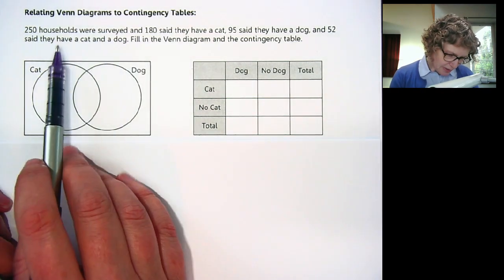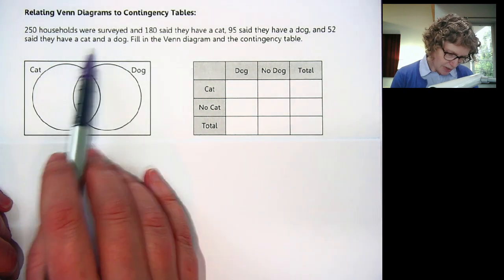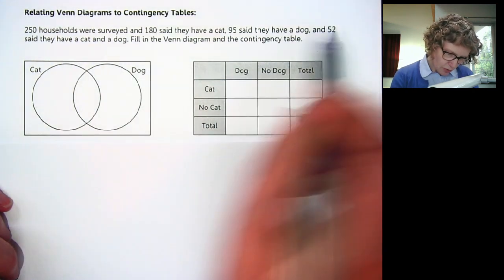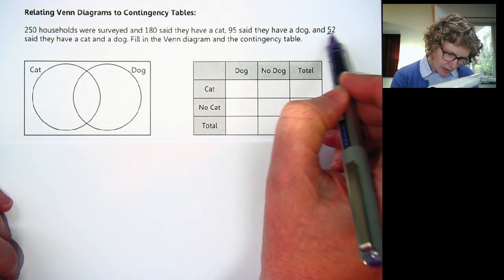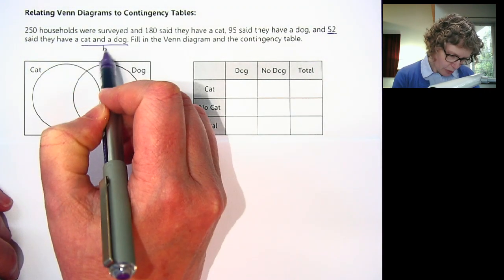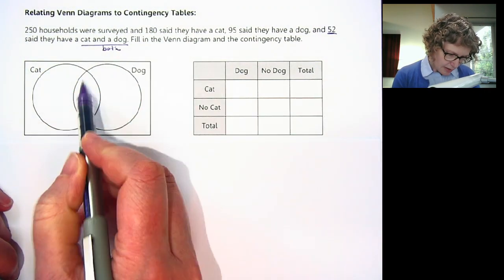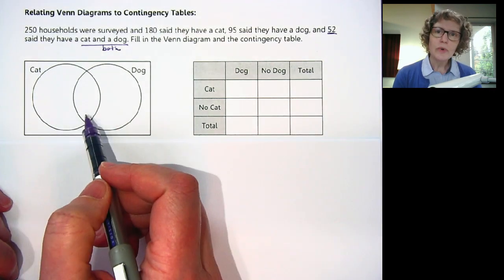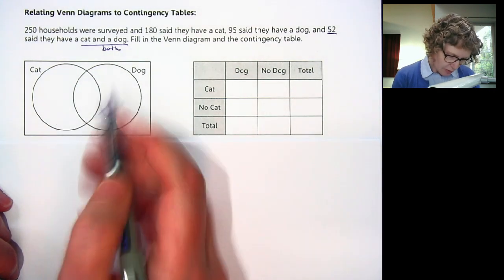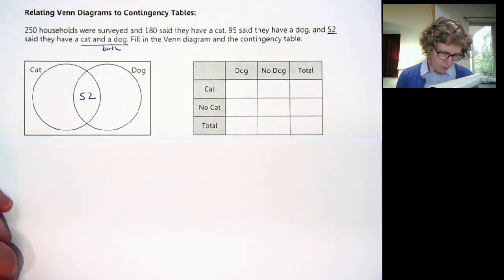You might remember doing these — we have to start with the inside. 52 said they have a cat and a dog, so that's both. And in the sets, that's where the sets overlap each other. So 52 have both.